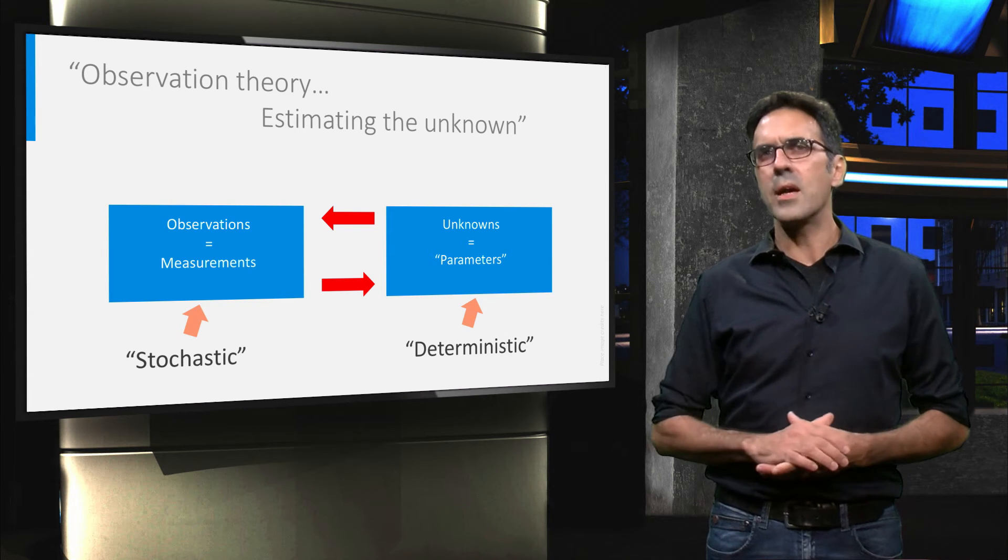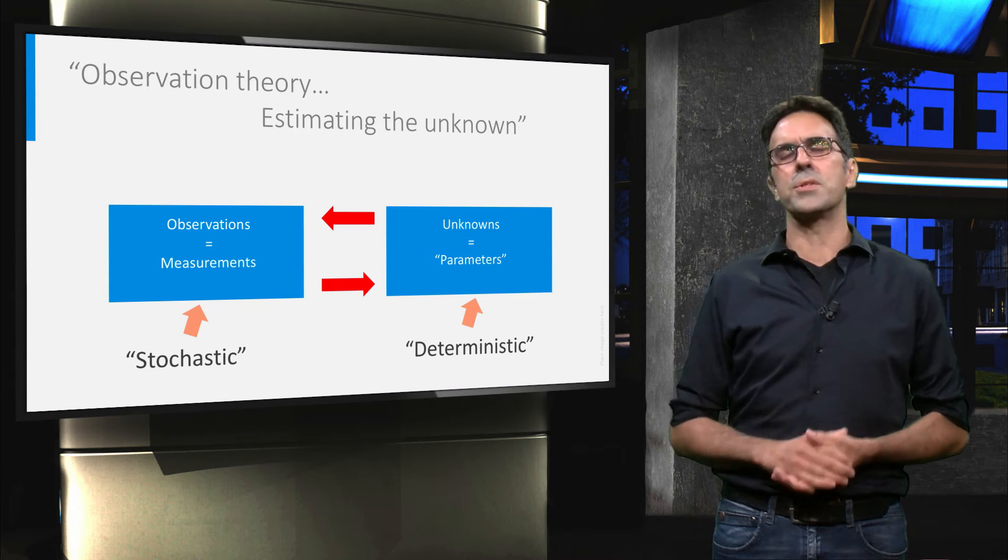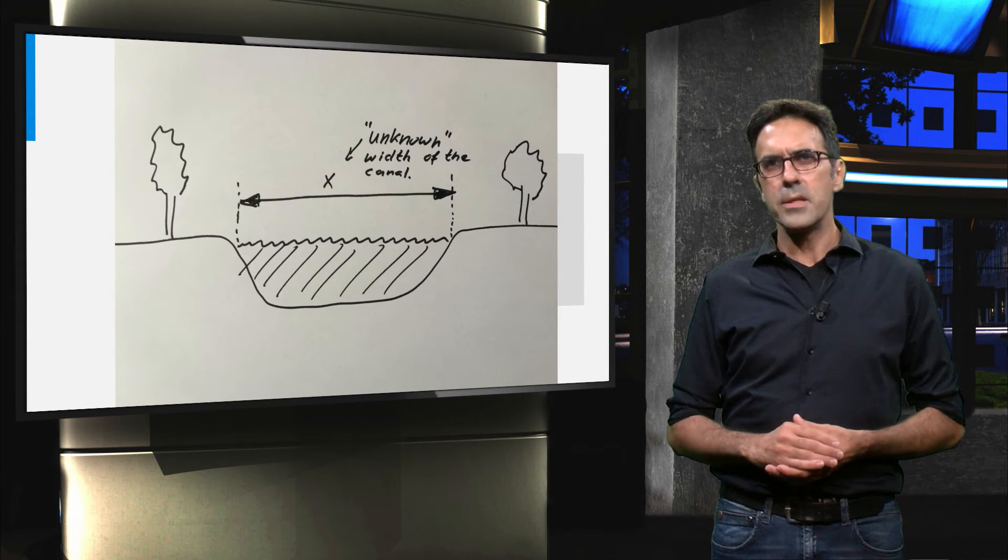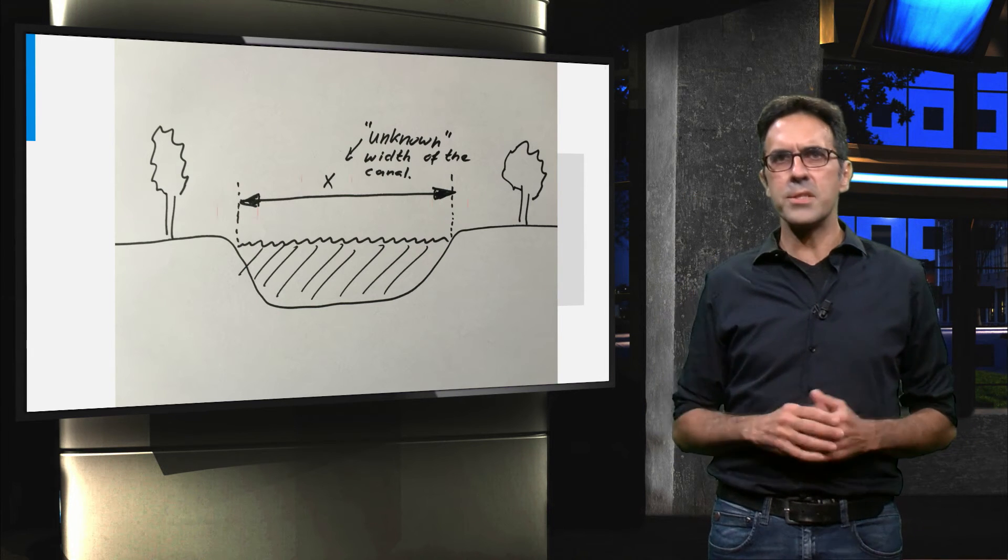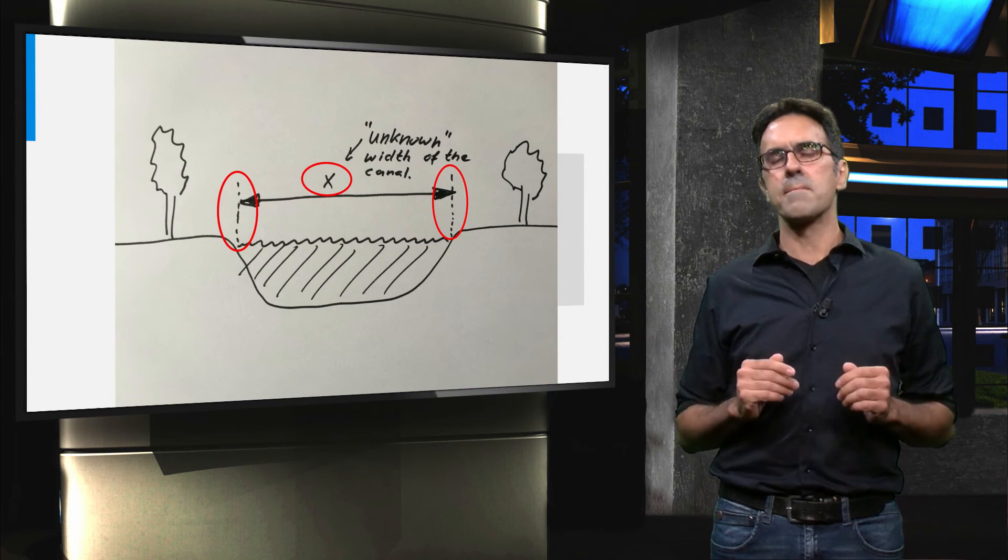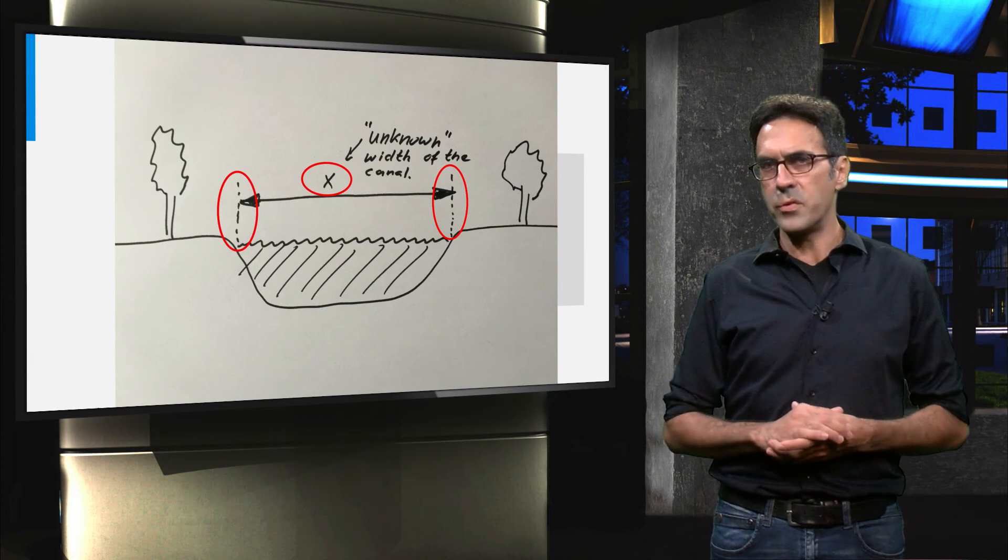Now, there is one more thing I would like to bring to your attention. For this, we need to go back to the unknowns. In the sketch, the width of the canal is unambiguous. We simply draw some dashed lines to indicate the width of the canal. However, obviously a sketch is an idealization of reality.